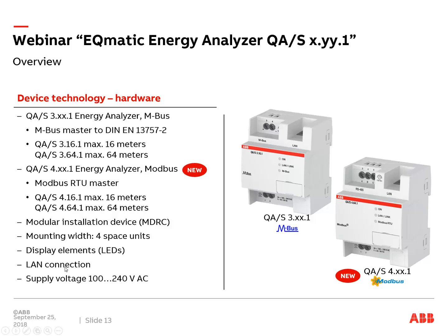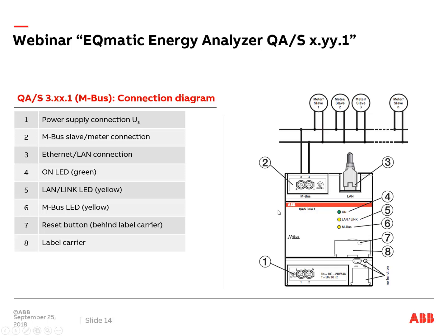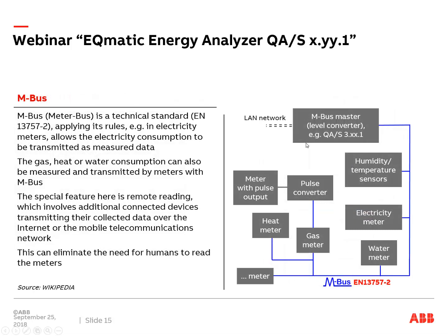Connection to LAN is necessary to have access via a standard web browser or to transmit data via email or FTP. The device needs additional supply voltage between 100 and 240 volts AC. On the Energy Analyzer MBUS QAS, the green LED indicates the device is ready, the yellow LED shows LAN link activity, and the MBUS status is OK. On top we have the output to our MBUS slaves — maximum 16 or 64. MBUS is a European standard used for electricity metering.